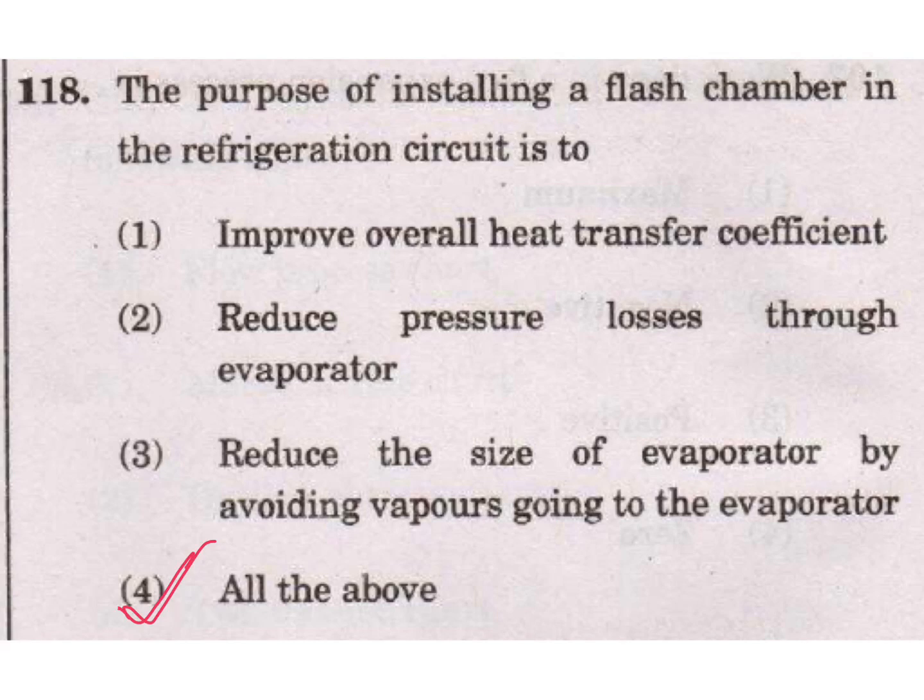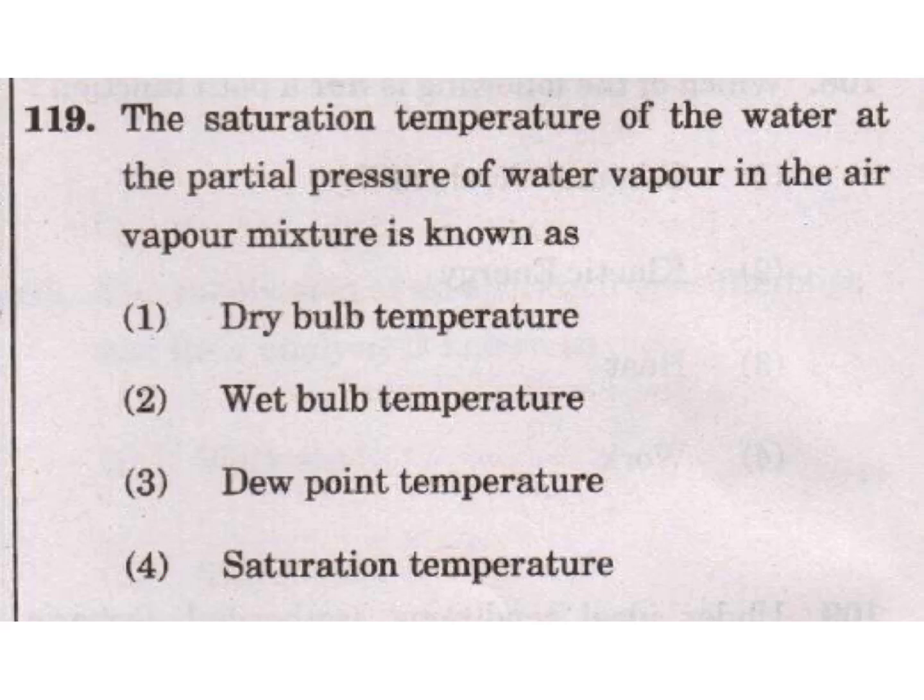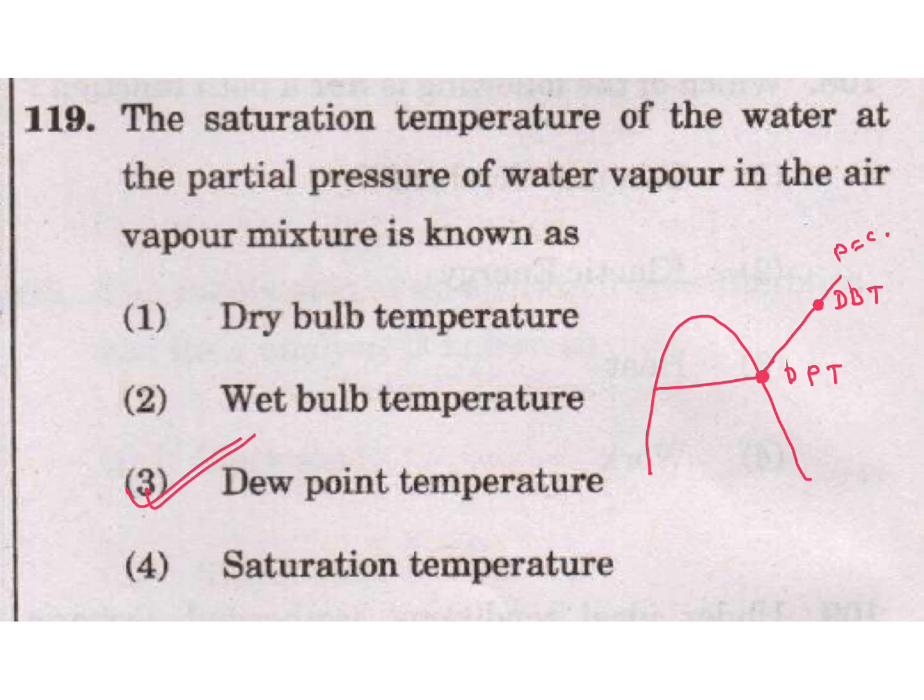Question 119: The saturation temperature of water at the partial pressure of water vapor in the air vapor mixture is known as? Saturation temperature of water at partial pressure. Here we will get dry bulb temperature DBT. Here we will get at saturation point and dew point temperature. So in this question, the saturation temperature - saturation temperature is dew point temperature. Wet bulb temperature is in between.